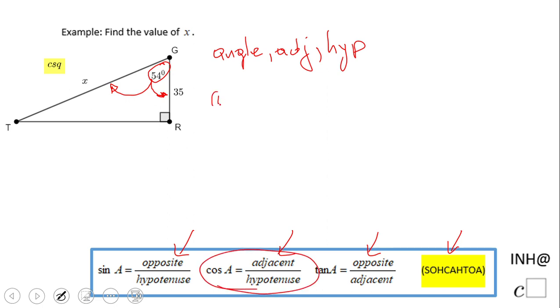We're going to have cosine of 54 equals... One more time: cosine of 54 equals the adjacent leg, which is 35, over the hypotenuse x. So we're solving for x.